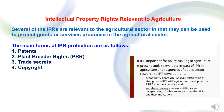Now to study intellectual property rights relevant to agriculture. Several intellectual property rights are relevant to the agriculture sector in that they can be used to protect goods or services produced in the agriculture sector. The main forms of intellectual property rights protection include trade secrets, patents, plant breeders rights and copyrights. Intellectual property rights are important for policy making in agriculture, and there are two tools used to evaluate the impact of IPR in agriculture: first, an econometric approach to analyze the relationship of strengthened IPR with agriculture development of TRIPS member countries; and second, a web-based survey to measure attitudes and perspectives of public sector personnel on IPR and their implications.